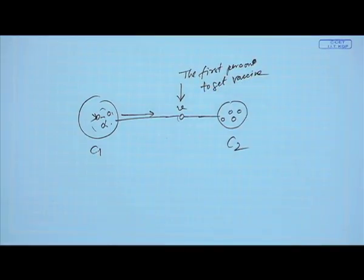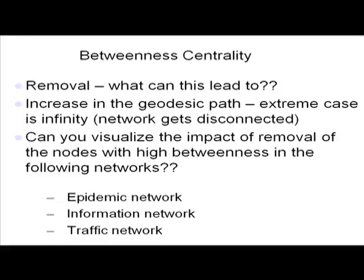If there is a limited supply of vaccines, nodes like V should be vaccinated first. Removal of such nodes could have very strong repercussions in various networks — like the epidemic example, or the internet router network from the last lecture. If one of the nodes like V shuts down, the entire internet backbone of a particular region might fail. It is only through this particular node that the two regions get connected, so these nodes are very important.